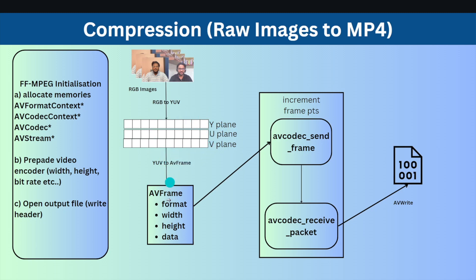All this YUV data is dumped into the AVFrame structure and stored in a pointer called 'data'. This data pointer points to the YUV buffer. For AVFrame, you need to define the format — such as YUV420P — with width 640 and height 360, along with all other parameters. You allocate a frame, define these properties, and then dump the YUV data into the AVFrame data structure. During the code walkthrough I will show everything in detail. Once complete, you have the AVFrame ready for a specific RGB image.